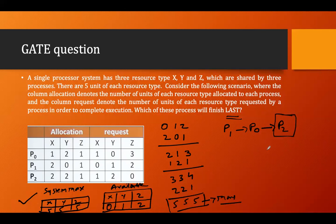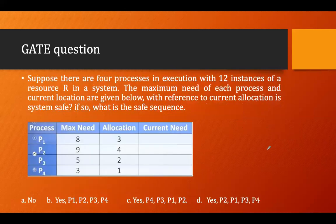Now the next question: suppose there are four processes P1, P2, P3, P4 with 12 instances of a resource in the system. The system max for the resource is 12. The max need of each process and current allocation are given.